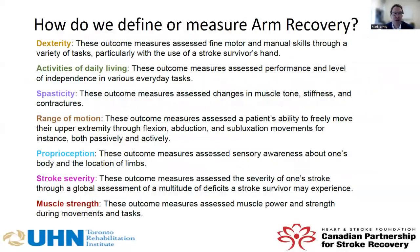There are a variety of ways in which we measure arm recovery. Dexterity is one of the first things that we look at — this is the ability to use your fine motor or manual skills through a variety of tasks, particularly the hand most affected by the stroke. Outcome measures that assess dexterity look at tasks specific to the fine movements of the hand.